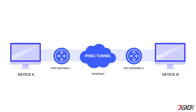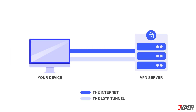Next is IPsec, or Internet Protocol Security. This is more like a set of tools for building secure tunnels. It's often used with other protocols like IKEv2 or L2TP to add extra security. It's very secure but can be a bit more complicated to set up. Then there's L2TP, or Layer 2 Tunneling Protocol — an older tunnel that needs extra help to be secure. It's almost always used with IPsec, but this combination can be slower and sometimes has issues getting through firewalls.